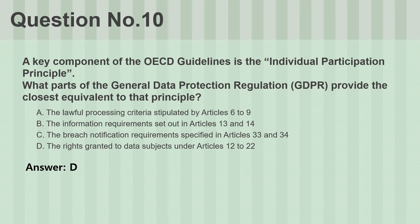Question number ten. A key component of the OECD guidelines is the individual participation principle. What parts of the General Data Protection Regulation, GDPR, provide the closest equivalent to that principle? A. The lawful processing criteria stipulated by Articles 6 to 9. B. The information requirements set out in Articles 13 and 14. C. The breach notification requirements specified in Articles 33 and 34. D. The rights granted to data subjects under Articles 12 to 22. Answer: D.